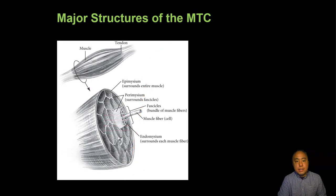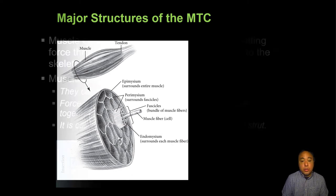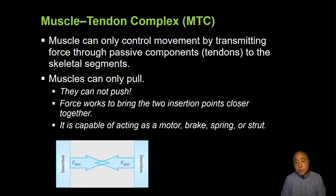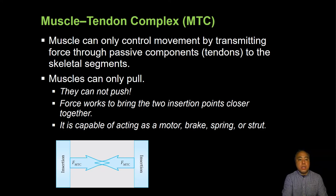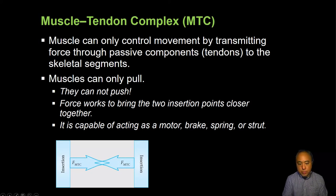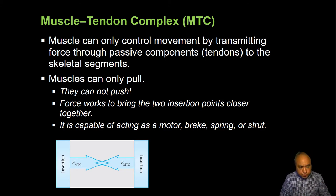How does a muscle transmit force ultimately to the joint? It does that through the musculotendon complex. The contractile part is the muscle itself — the force generation capacity — and it transmits to the tendon, which is essentially passive. The tendon's job is to transmit the force generated by the muscle to the attachment on the bone, at whatever the insertion points are. Muscles can only pull — they can only bring two insertion points together; they do not push. And so the muscle is capable to act as a motor, a brake, a spring, or a strut, depending on the force demands and the human movement being performed.